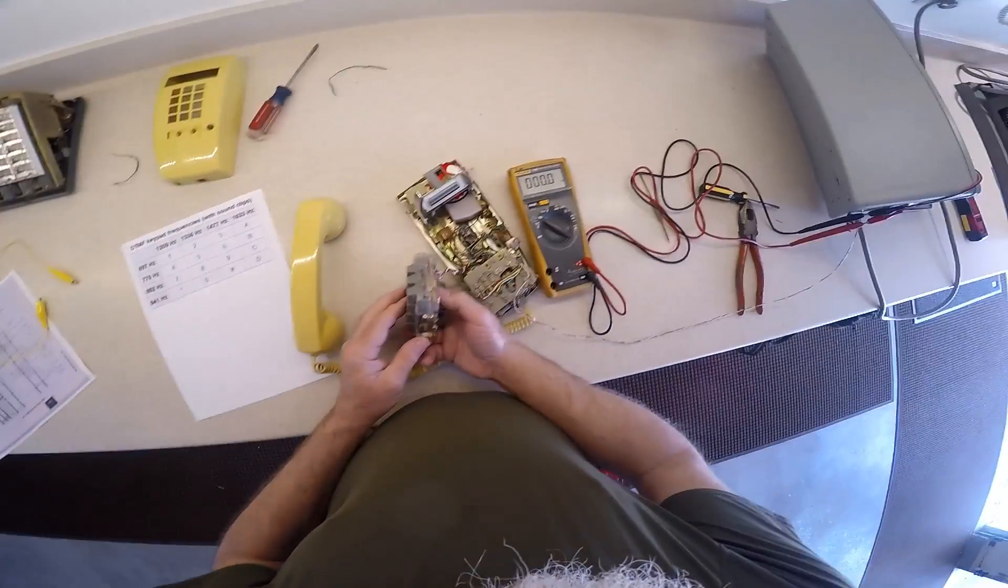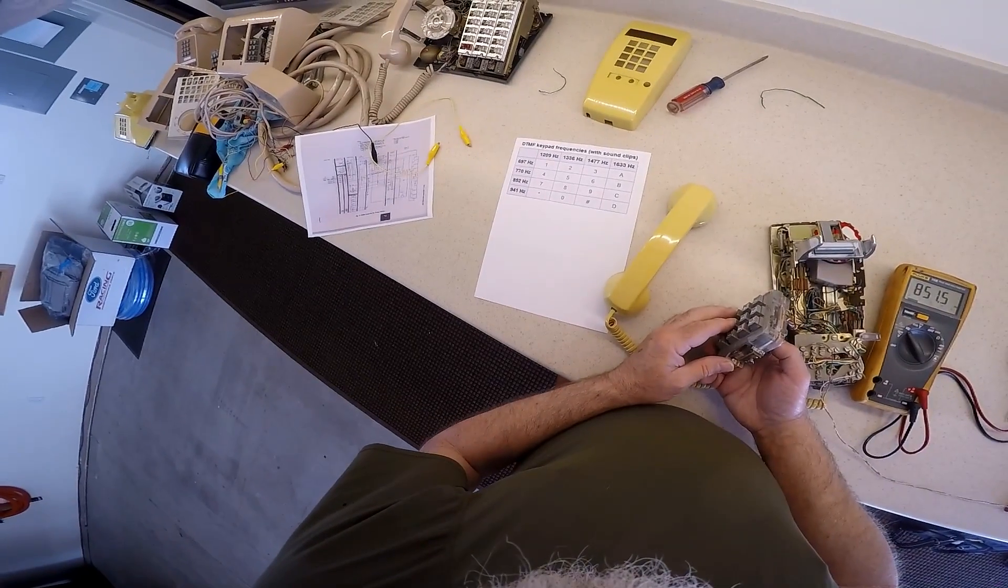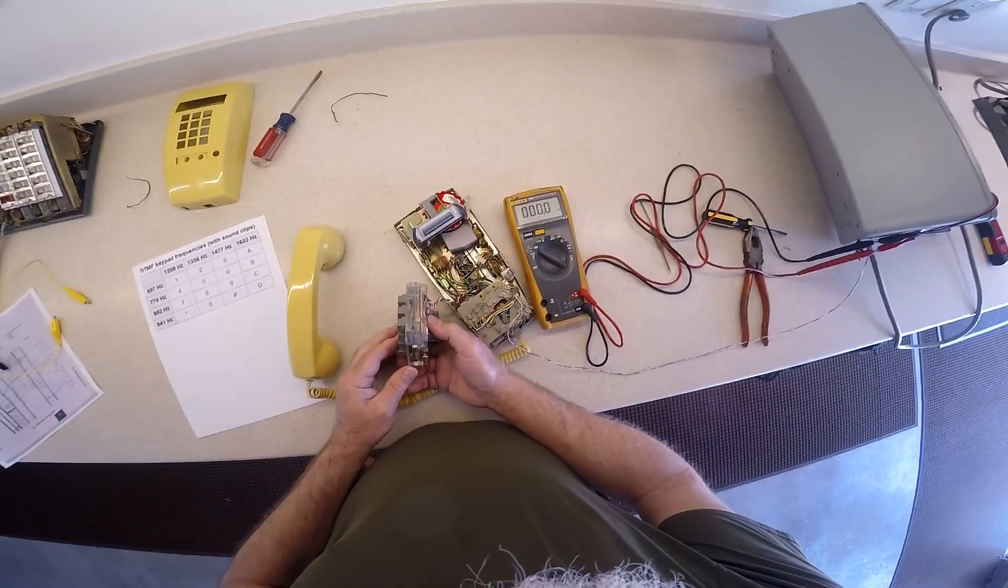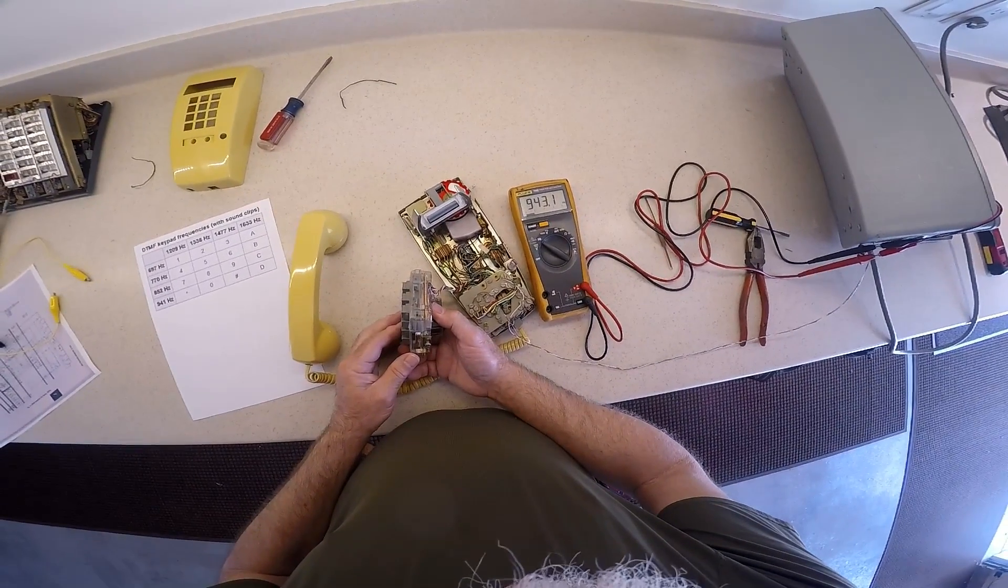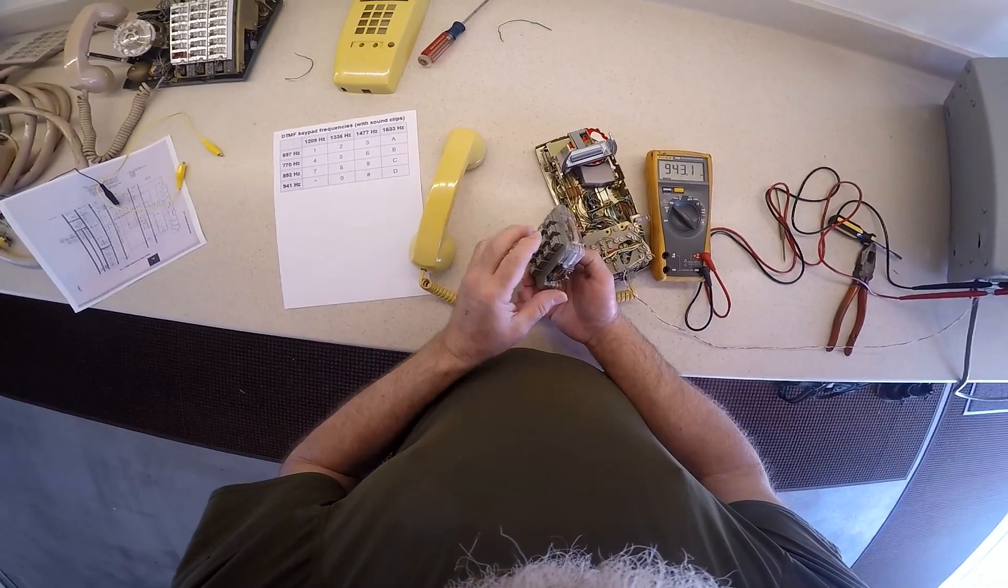Seven and eight should give us 852. 851 and a half. And then star and zero should give us 941. We're 943. So that one's a little off. I'm not going to fool with it because everything else is real close.